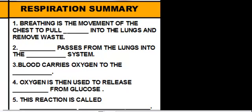To summarize this all up, let's fill out this last part here at the bottom. Breathing is the movement of the chest to pull oxygen into the lungs and remove wastes, which is the CO2 or carbon dioxide. Once the oxygen is in the lungs, the oxygen will then pass from the lungs into the cardiovascular system. So it's going to go into the vessels and then travel inside of the blood. Now the red blood cells in the blood are going to carry oxygen to the rest of the body. Once the body gets the oxygen that it needs, the oxygen is then used to release energy from the glucose inside of the mitochondria. Once we get that energy, we can then use that energy to do various things. And this whole reaction is called cellular respiration.